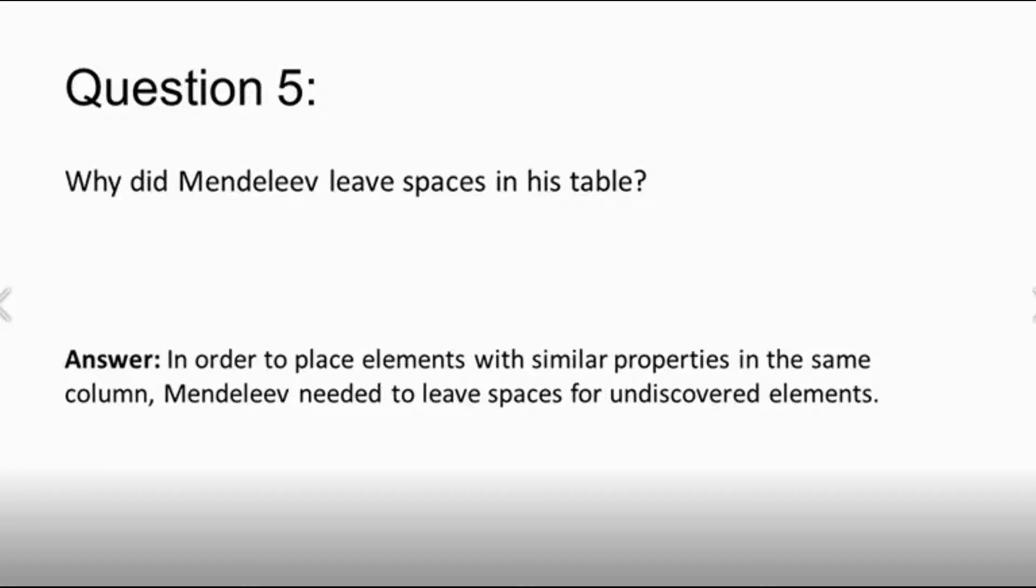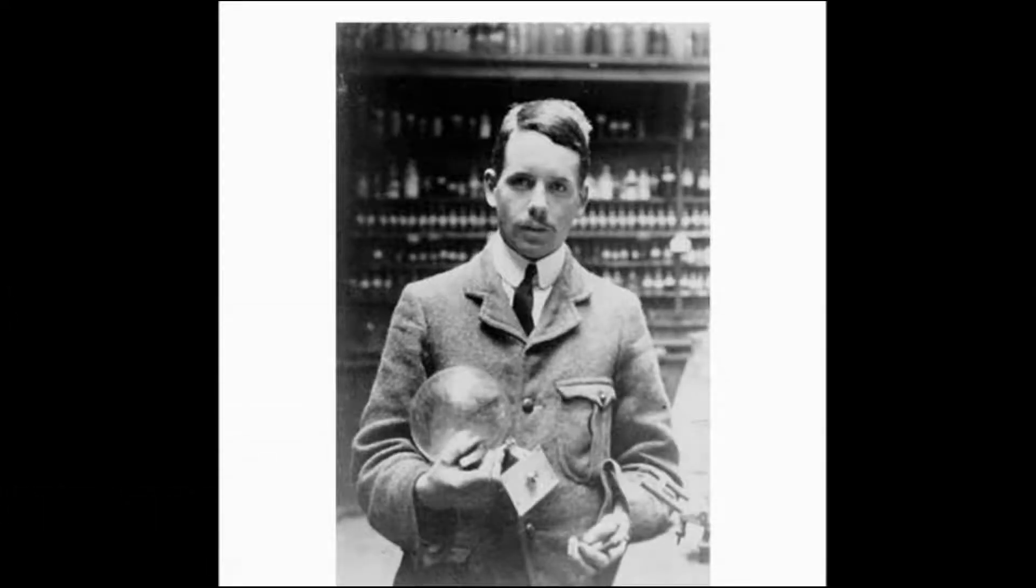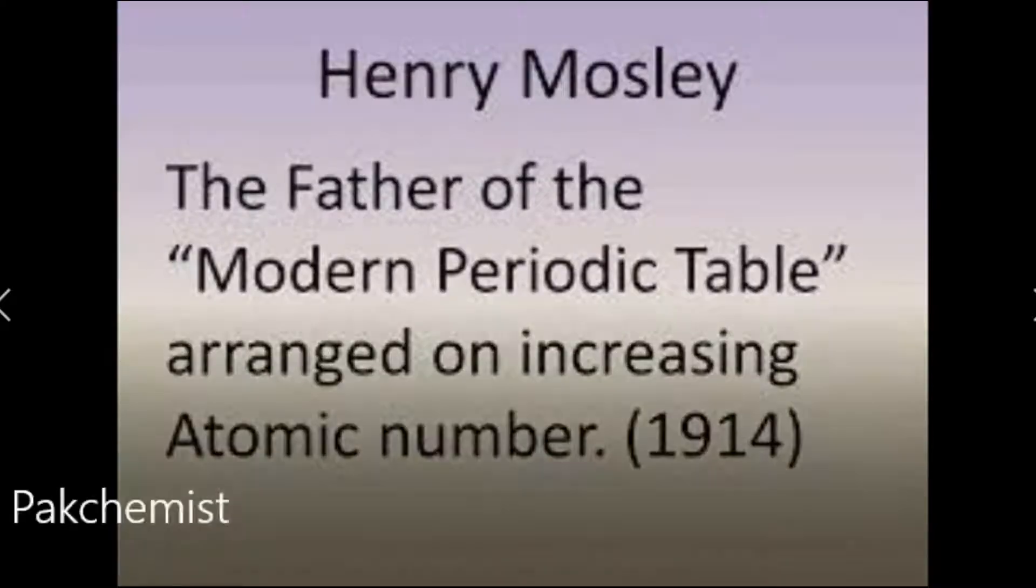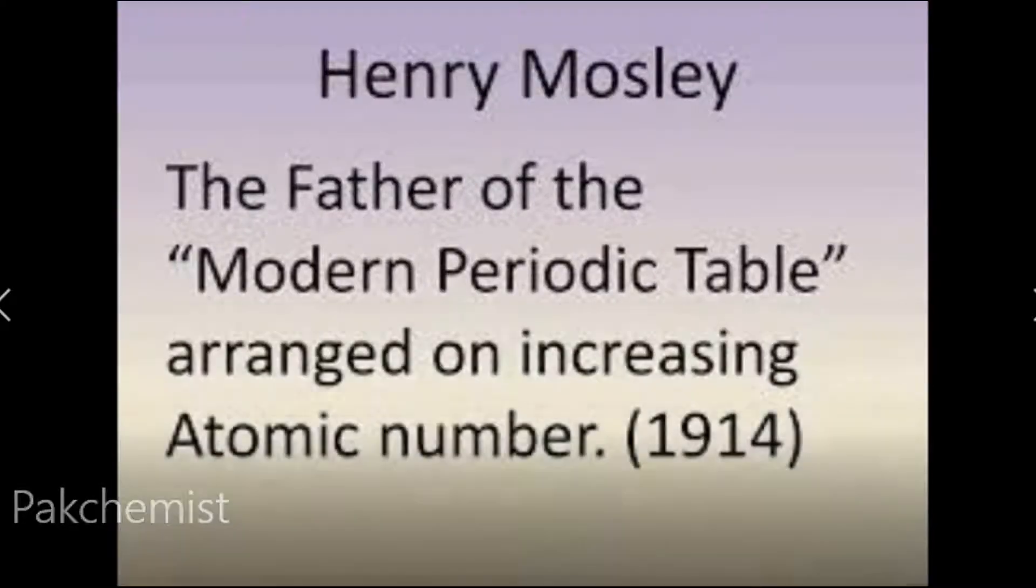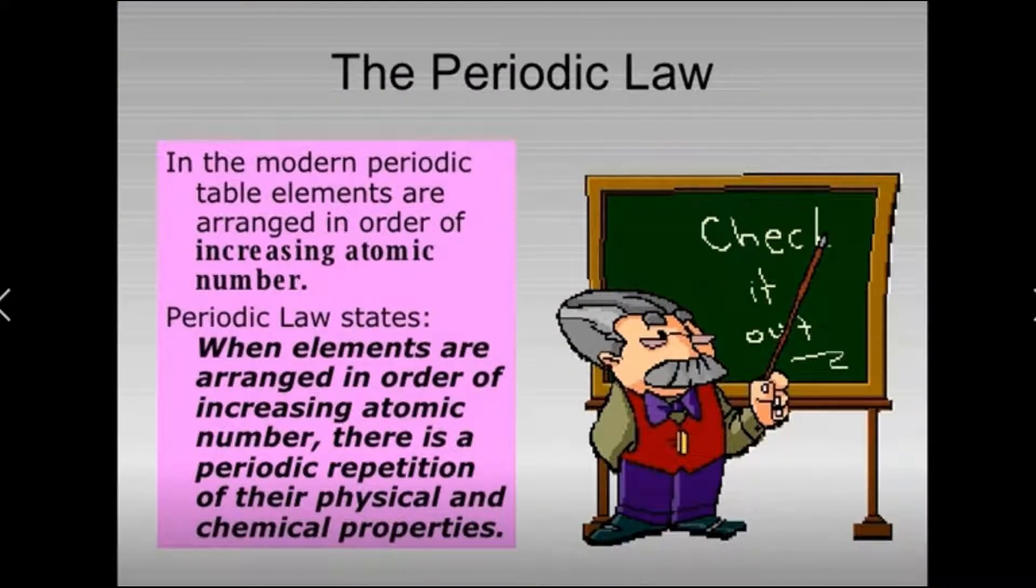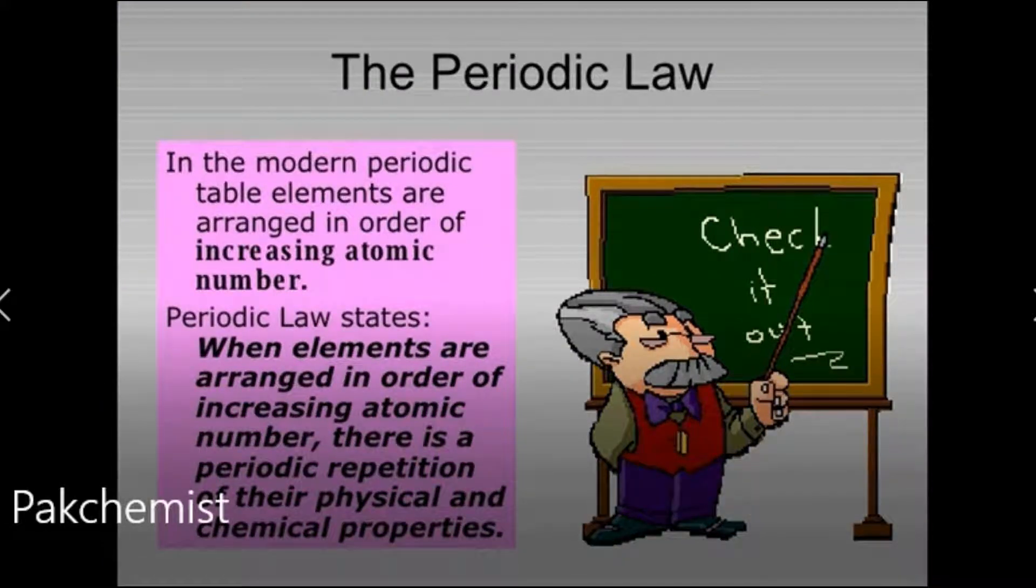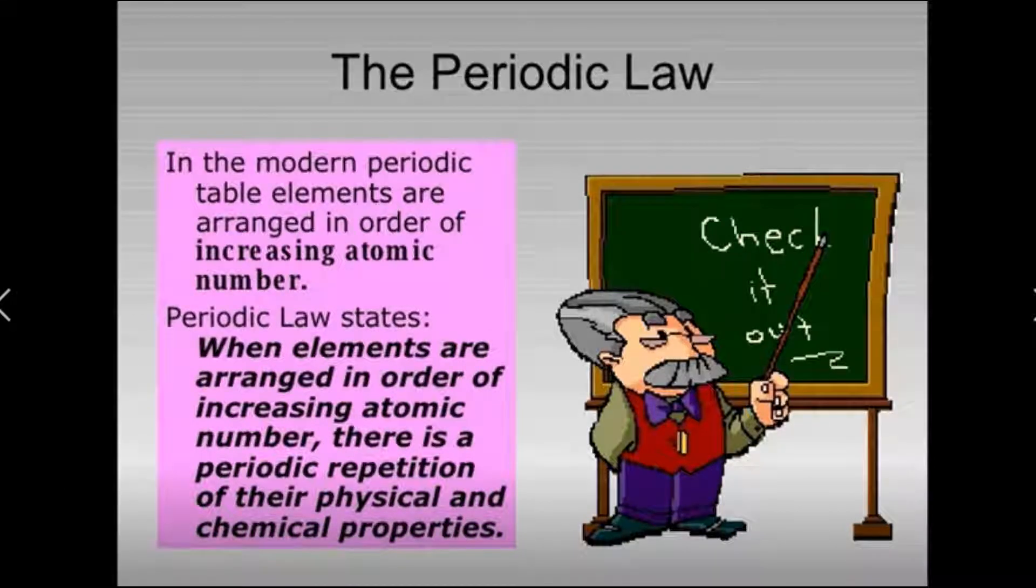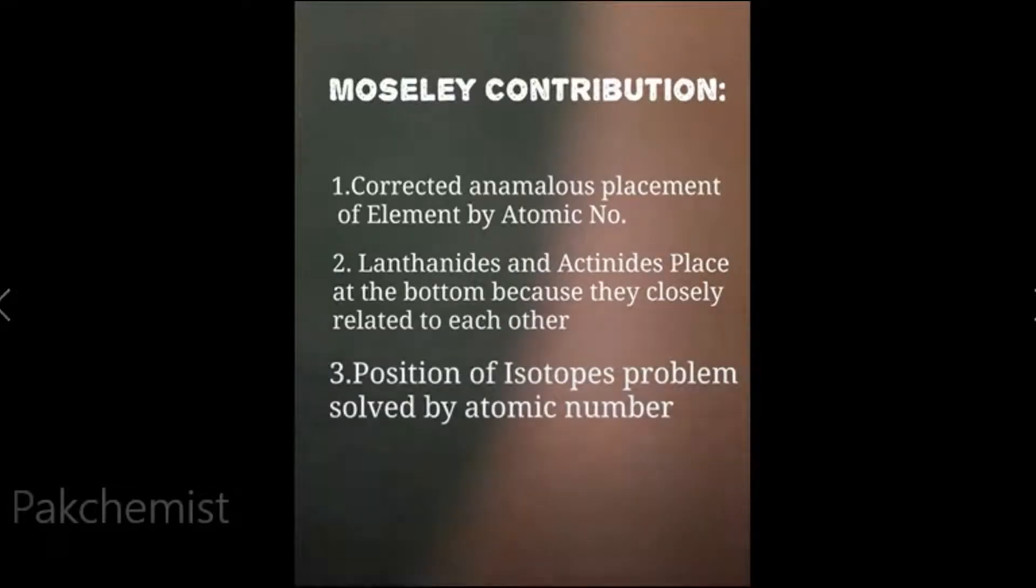Now coming to Moseley. He is called the father of modern periodic table. He arranged his table on atomic number basis with repetition of physical and chemical properties. He has some points in the same way. Number one, he corrected the Mendeleev table, of course. Anomalous placement was corrected on atomic number basis. He arranged like tellurium, which in Mendeleev's table was placed before iodine, and in the modern periodic table it comes after iodine.